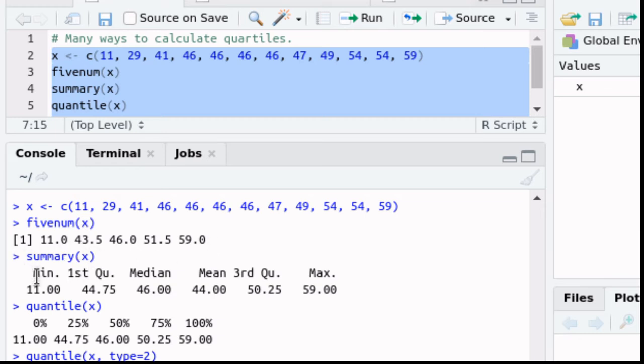If you ask for summary then it gives the output like this. It tells you what the minimum is, the first quartile, the median. It also gives you the mean so it gives you six numbers here instead of just five. The third quartile and the maximum.